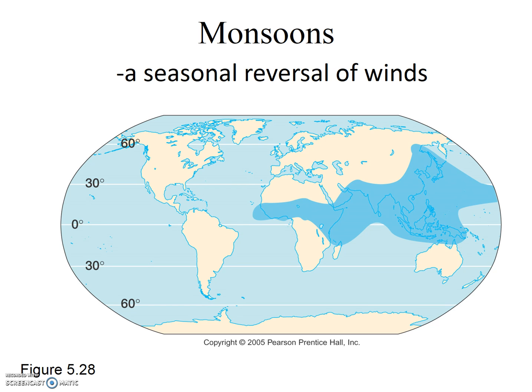This is yet another example of a region of the world that gets considerably more rain in the summer than in the winter. Again, here in California, we're strange. Dry summers are a strange phenomenon.